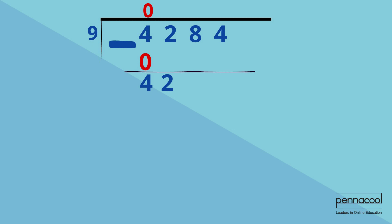We know that we can get 4 nines in 42 with remainders. 9 multiplied by 4 equals 36. 4 goes in our answer space at the top of our question, and 36 goes directly under 42 to be subtracted, which leaves a remainder of 6.